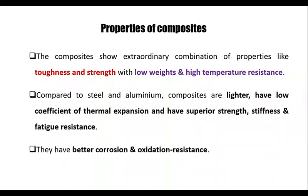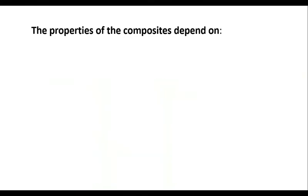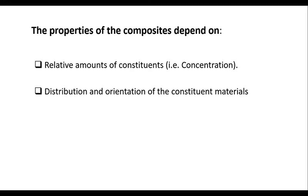They have better corrosion and oxidation resistance. The properties of composites mainly depend on relative amounts of constituents, that means the concentration of the matrix phase and the reinforced phase, distribution orientation of the constituent materials, and shape and size of constituents.